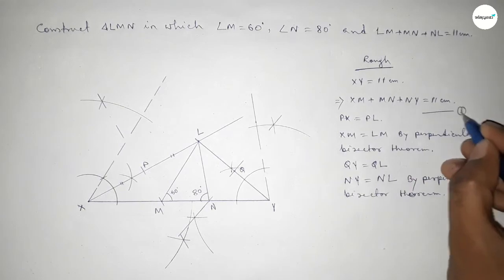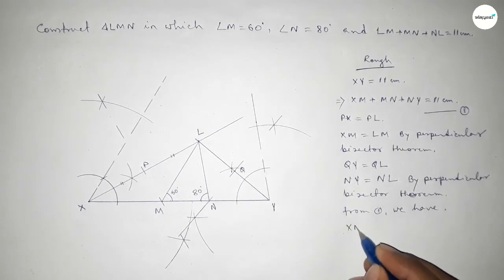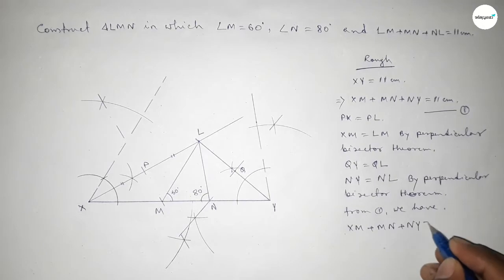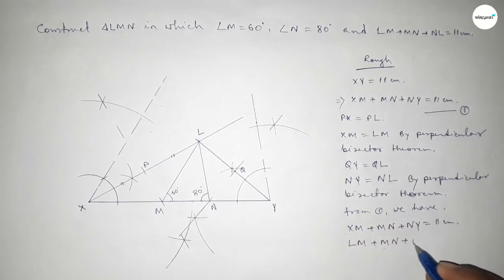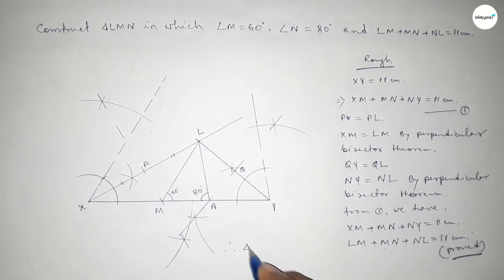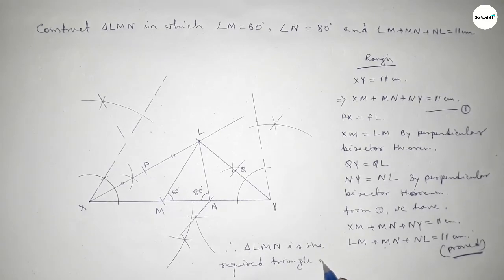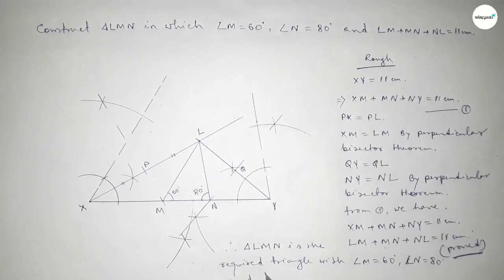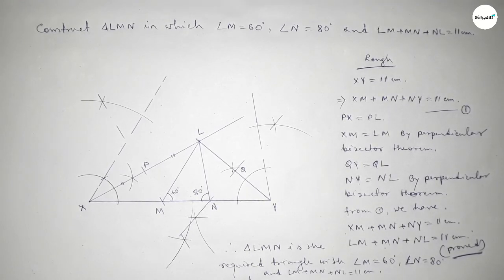From our equation, XM plus MN plus NY equals 11 centimeters. Replacing XM with LM and NY with NL, we get LM plus MN plus NL equals 11 centimeters. That's the proof — therefore triangle LMN is the required triangle where angle M equals 60 degrees, angle N equals 80 degrees, and the perimeter is 11 centimeters. Thanks for watching — if this video is helpful, please share it with your friends.